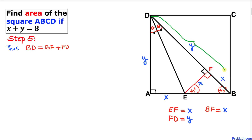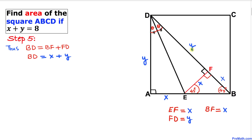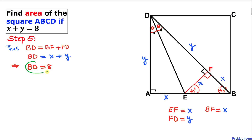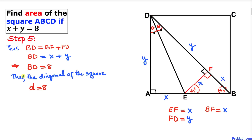Now let's focus on the main diagonal BD. It equals BF plus FD, which is x plus y. We know x plus y equals 8, so diagonal BD turns out to be 8 units.